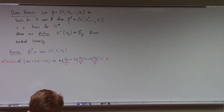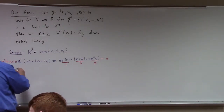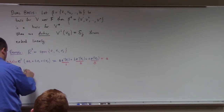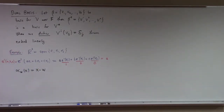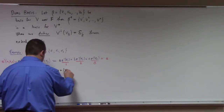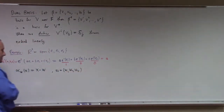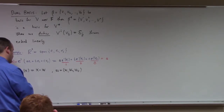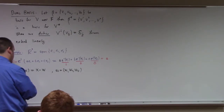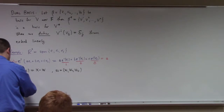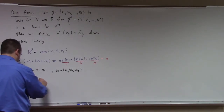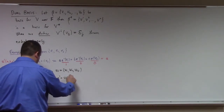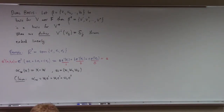Going back to my other example, alpha sub w, where alpha sub w of x equals x dot w. Let w = (w₁, w₂, w₃). My claim is that we can write alpha sub w as w₁·e^1 + w₂·e^2 + w₃·e^3. We can build the dual vector alpha sub w as a linear combination of these dual basis elements.